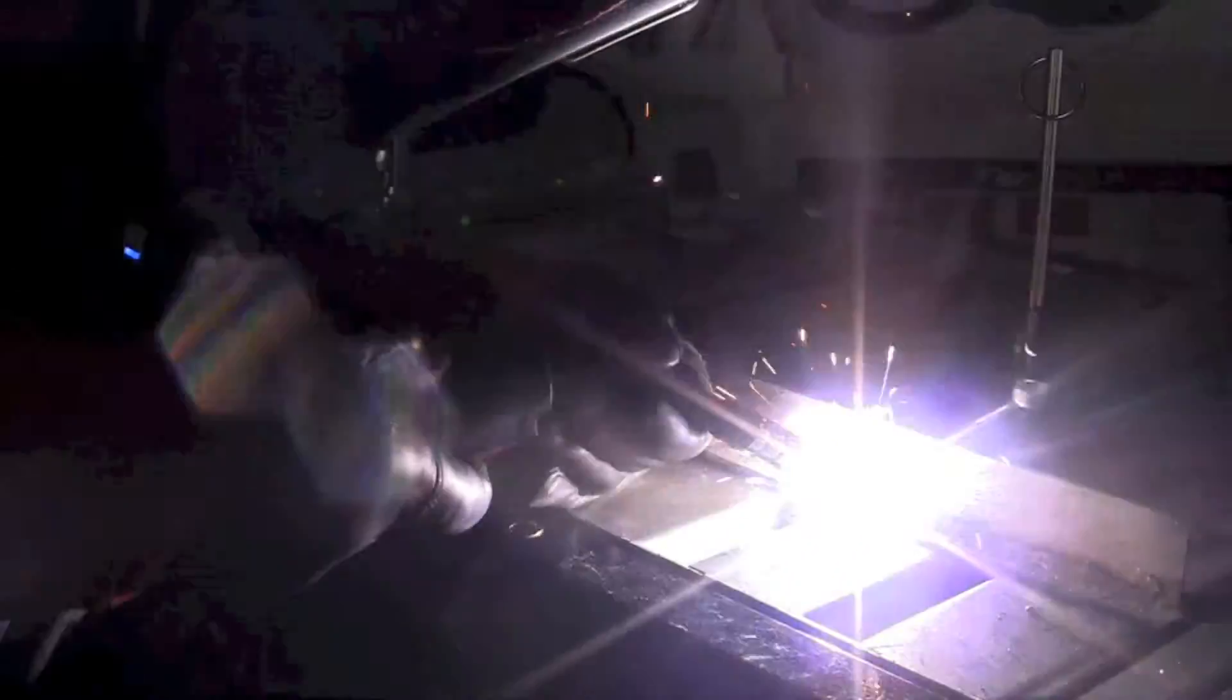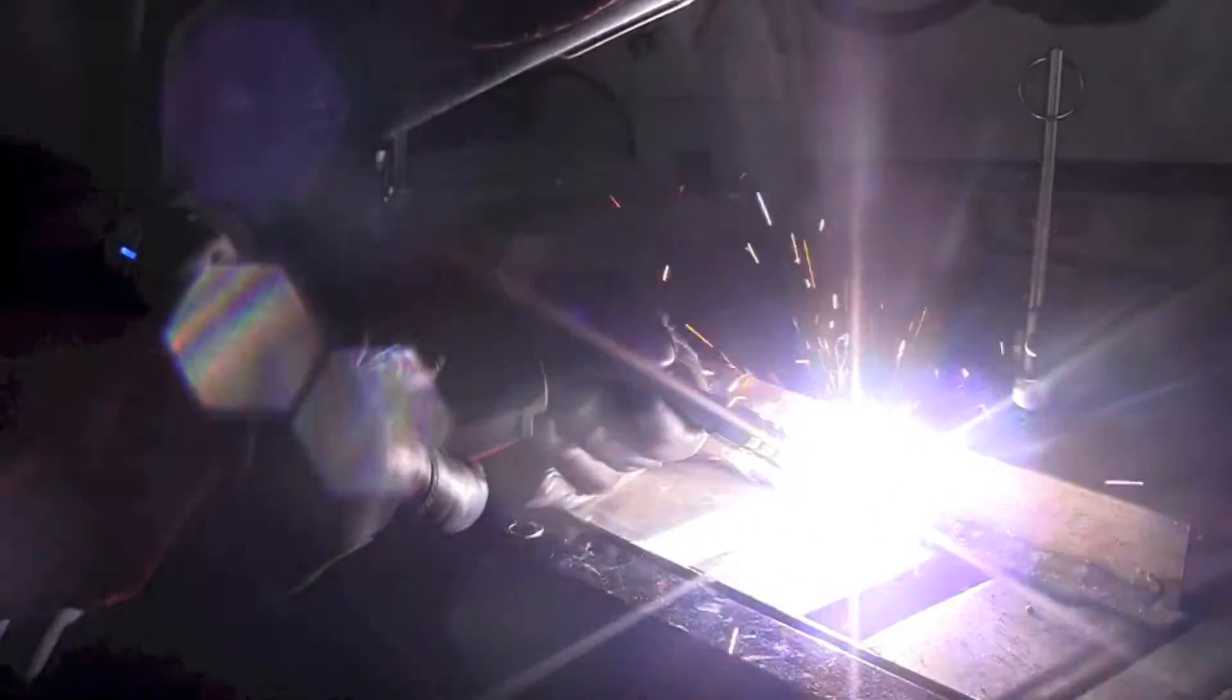So I continue on making the weld, just keeping the joint full, moving along slowly, paying attention to my stick out, which is very important with flux core arc welding with the self-shielding wire. Variations in our stick out can cause problems with our weld. So we want to make sure that we keep and maintain that stick out.